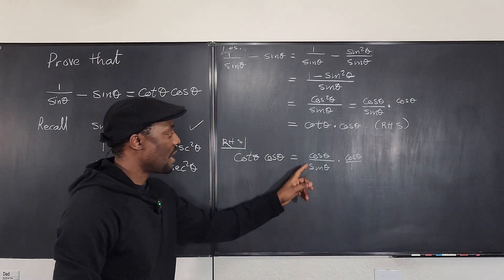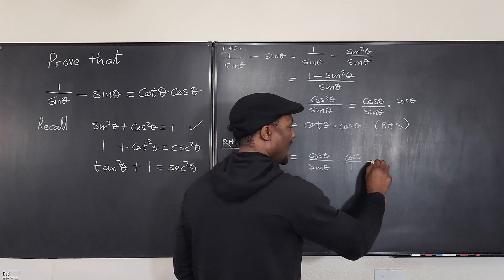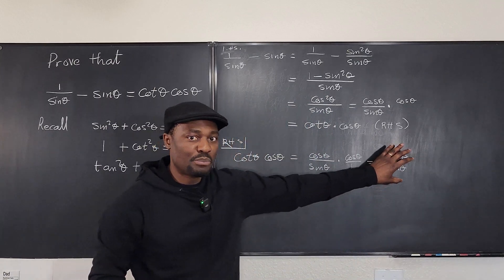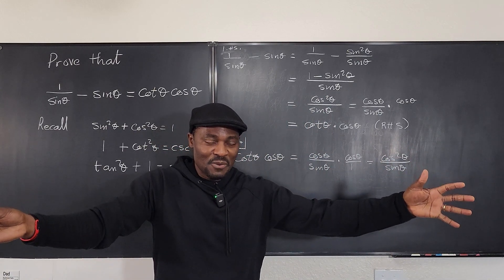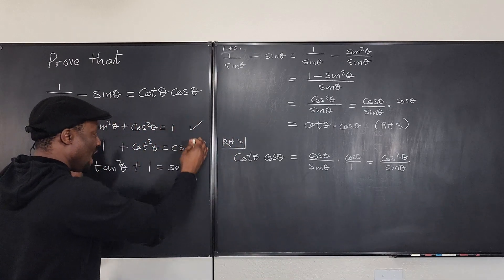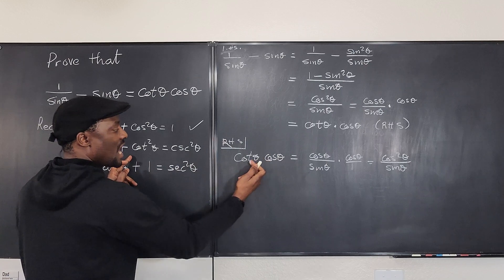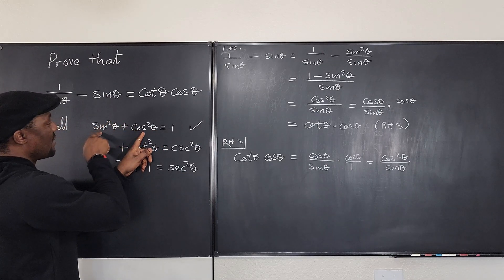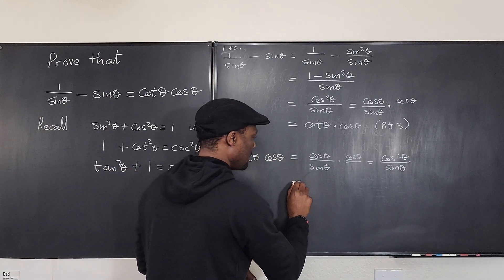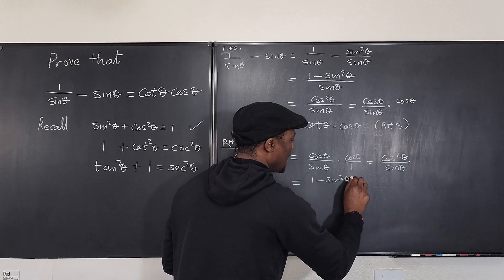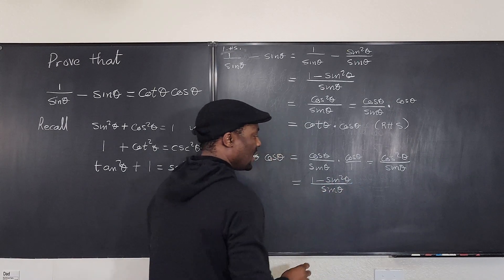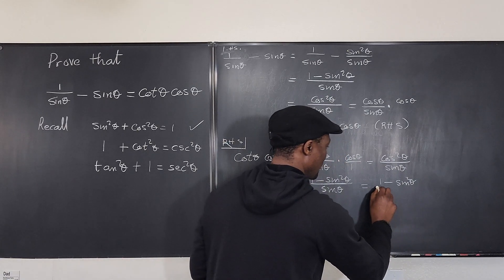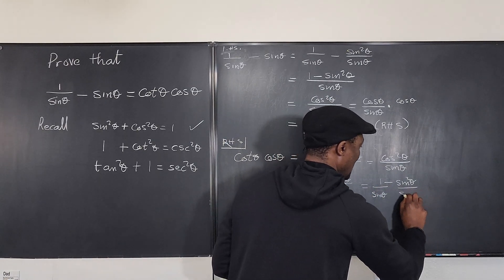Multiplying top and bottom, I get cos²θ/sinθ. Now I want to go from a product to something with a minus in between. I couldn't use the cotangent-squared identity because I have a square of cosines. So from the Pythagorean identity, cos²θ = 1 − sin²θ. This gives me (1 − sin²θ)/sinθ, which I can split as 1/sinθ minus sin²θ/sinθ.